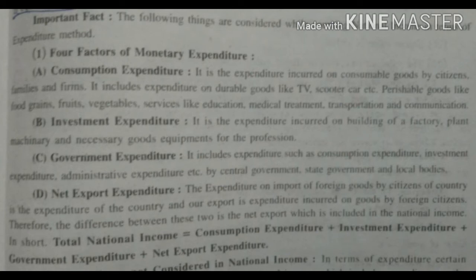Next is government expenditure. It refers to the expenditure incurred by the government on various administrative services like defense, law and order, and education. Consumption expenditure, investment expenditure, and administrative expenditure are different types of expenditure done by the central government, state government, and local bodies.